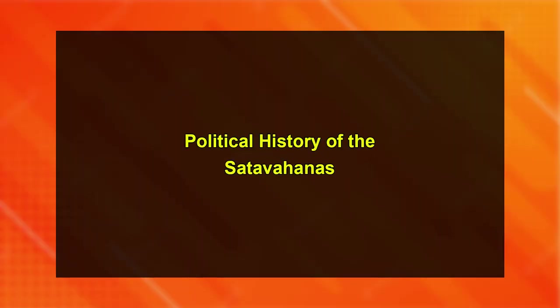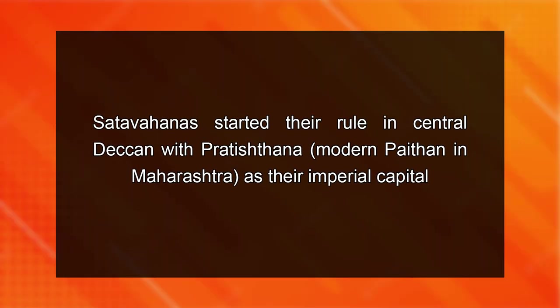Let's move to the political history of the Satavahanas. The 1st century BCE marked the rise of Satavahana rule in India, with Paithan as a powerful political centre since the time of its first ruler Saimuka, belonging to the late 1st century BCE. They ruled for almost 250 years. Satavahanas primarily originated in the regions of eastern Deccan, between the Krishna and Godavari rivers. Originally, they started their rule in central Deccan with Pratishthana, which is modern Paithan in Maharashtra, as their imperial capital.